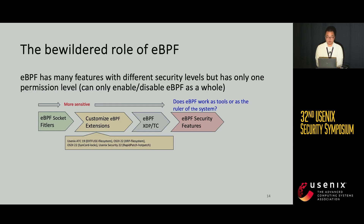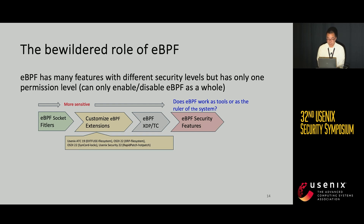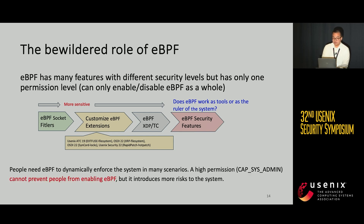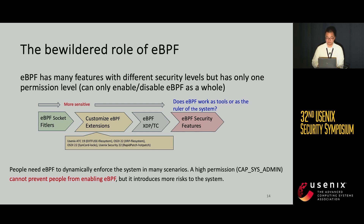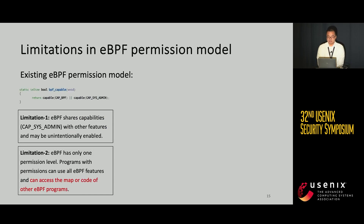Currently, eBPF rules are provided on cloud. People hope to use eBPF as a powerful tool to extend their systems in different aspects, but eBPF only has one permission level. As a result, enabling eBPF can give it control of the system. People need eBPF to dynamically extend the system in many scenarios, but the eBPF maintainers think users should be aware of its high permission requirements, which usually introduces more risks. The existing eBPF capability mechanism has two limitations: first, eBPF shares capability with other features and may be unintentionally enabled; second, eBPF has only one permission level, so programs with eBPF permission can use all eBPF features.